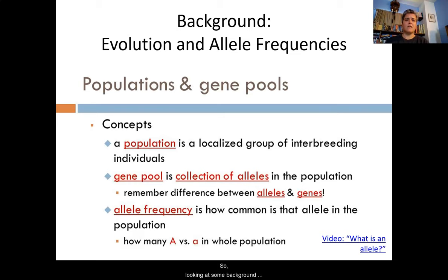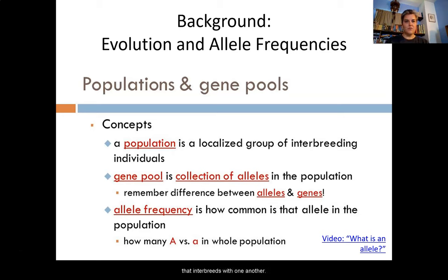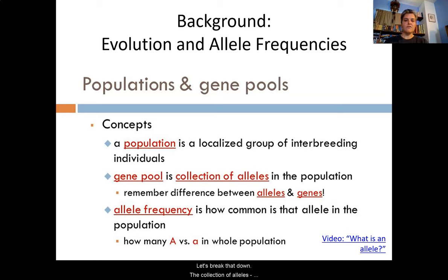Looking at some background information first around evolution and allele frequencies, we need to talk about some vocabulary. First, we need to understand that a population, in the terms of evolution, is a localized group of interbreeding individuals — a group that's in the same space and interbreeds with one another. Second, a gene pool is a collection of alleles in the population. Let's break that down.